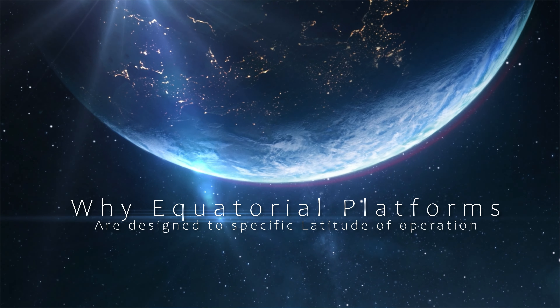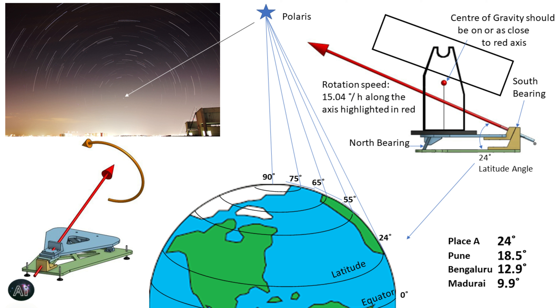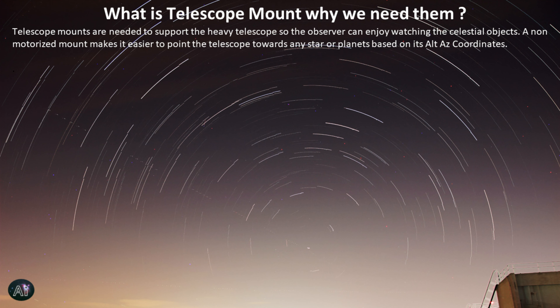Hello everyone. In my previous video I mentioned I'm going to make a series about how I made my equatorial platform. Today's video is about what initial data collection you need to do before you start designing your equatorial platform. Unlike the equatorial mount which has an adjustment for the latitude — basically the elevation of Polaris — the equatorial platform has to be designed for a specific latitude. The first step is to know exactly which latitude you want to use it at.